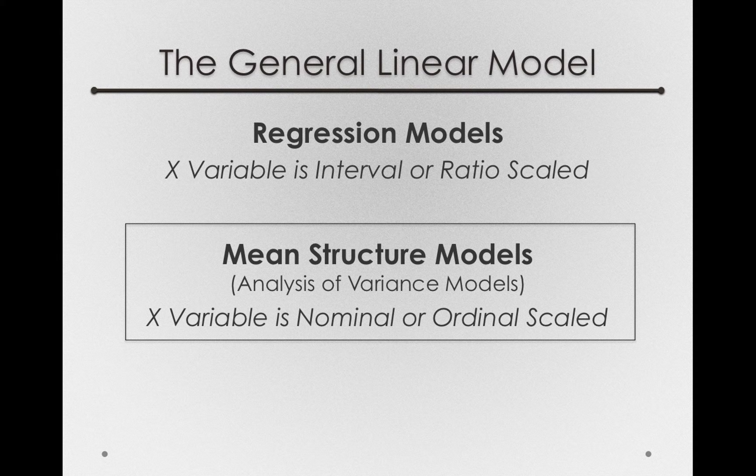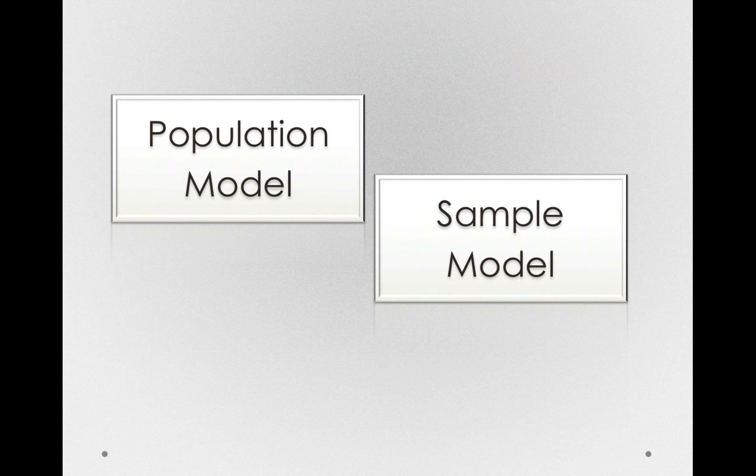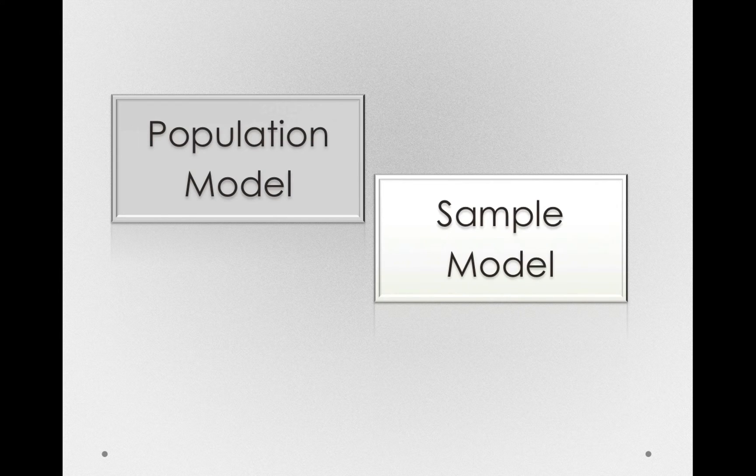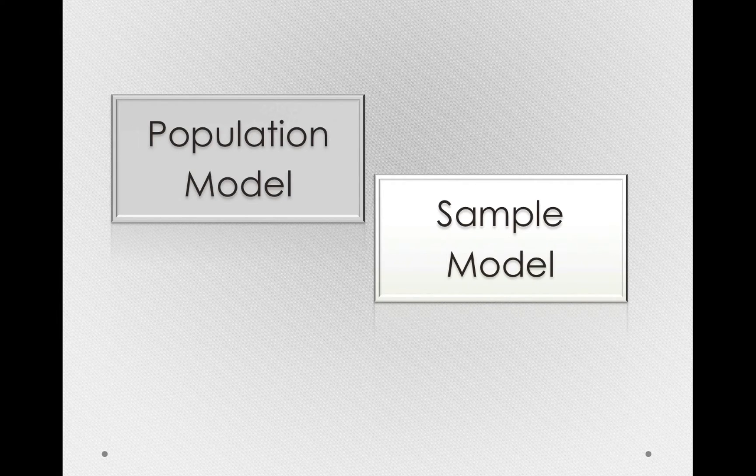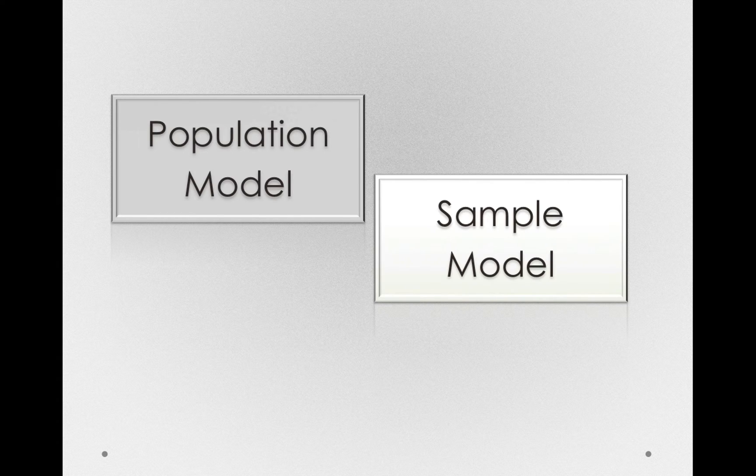Now as we think about our inference, we should think about the fact that there is a population model and a sample model. So we'll start this discussion by looking at how we would describe individuals in the population, and then we'll move back to the sample and talk about how we can use the sample model to make a prediction about that population.